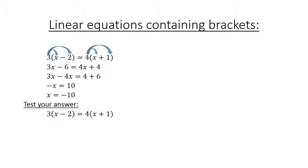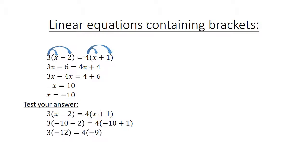Now test your answer. We have the same equation: 3 in brackets x minus 2 equals 4 in brackets x plus 1. We substitute all x's with negative 10. So 3 in brackets negative 10 minus 2 equals 4 in brackets negative 10 plus 1. We have 3 in brackets negative 12 equals 4 in brackets negative 9. Negative 36 equals negative 36.